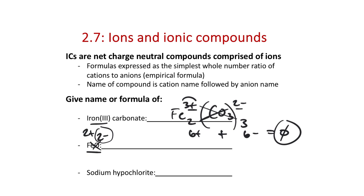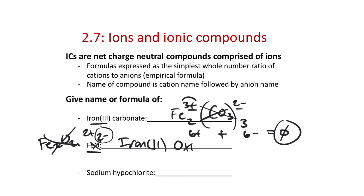If I know the charges, I cross-multiply if they're odd and even. For 2+ and 2-, I don't cross-multiply because that would give a non-empirical formula — Fe2O2 is not the simplest ratio. FeO is the simplest ratio. So the charge of iron here is 2+, making this iron(II). So it's simply iron(II) oxide.